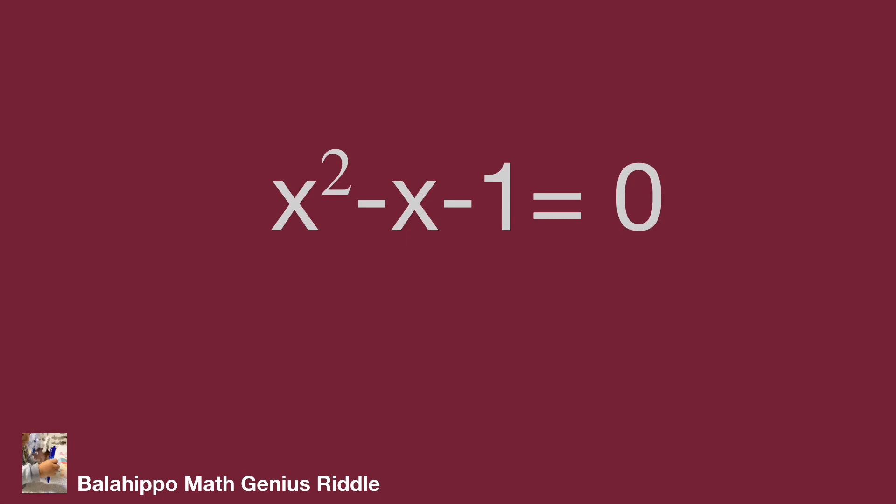The formula to get x from ax squared plus bx plus c equals 0 is x equals minus b plus or minus square root of b squared minus 4ac over 2a.